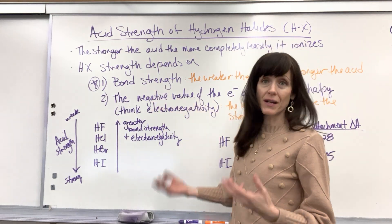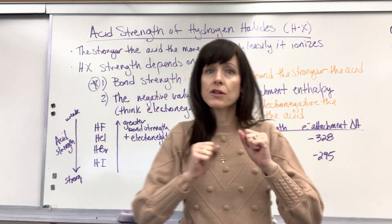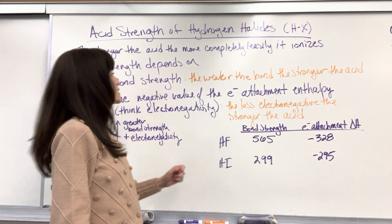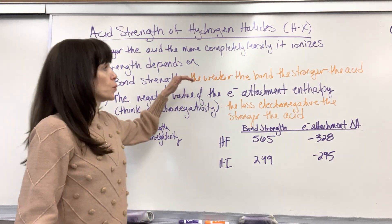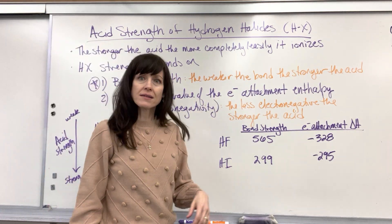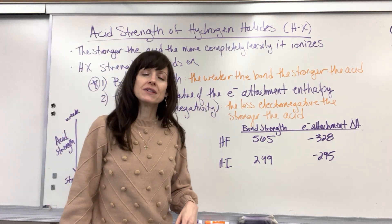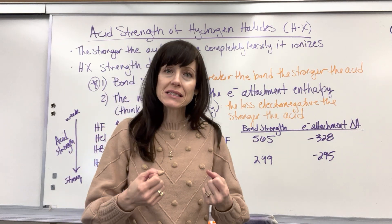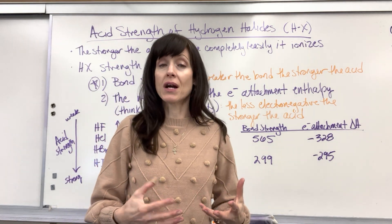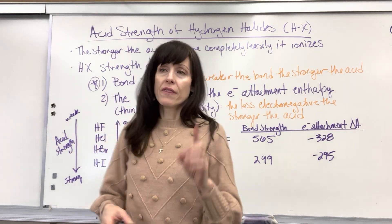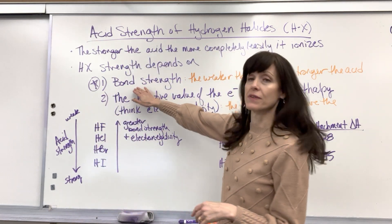The first one is bond strength. And here's your big takeaway — here's what you can take to the bank: the weaker the bond, the stronger the acid. Because if it's a weaker bond, it more easily breaks apart, more easily ionizes. That's the most important thing to look at.